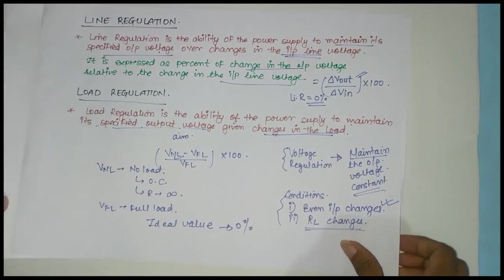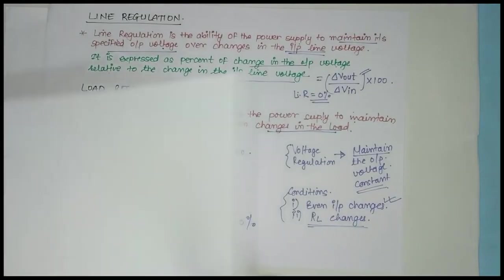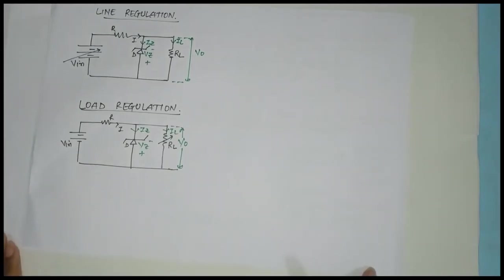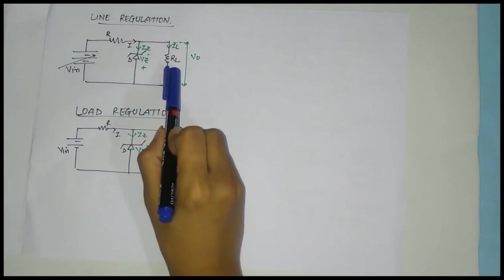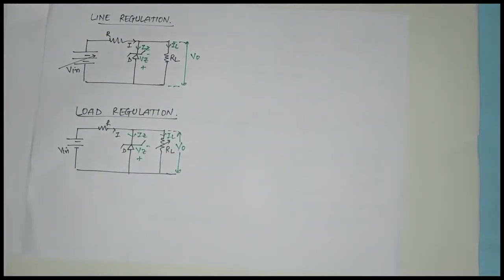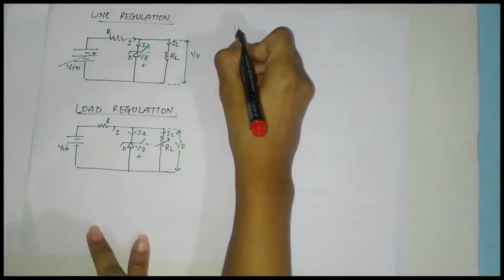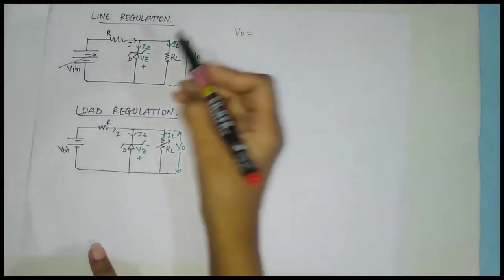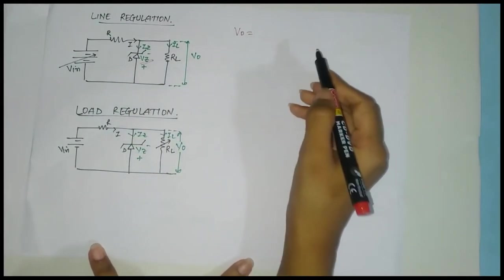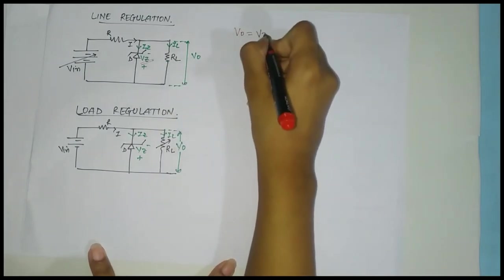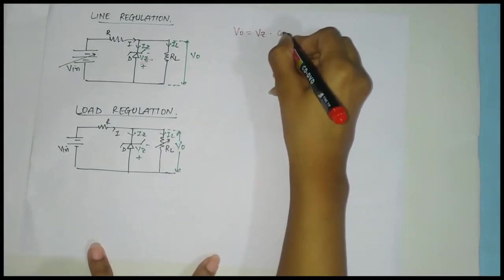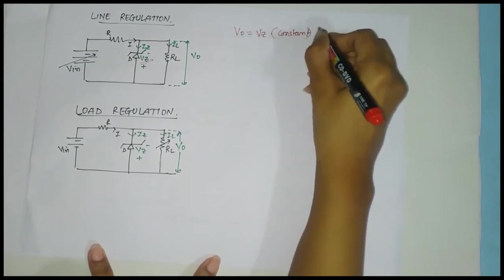Now let's look more deeply into line regulation. This is the circuit diagram for line regulation. In line regulation, the input voltage can change but the output voltage should remain constant, while RL is kept constant. From this diagram, the output voltage V-out equals VZ, because RL is connected in parallel with the Zener diode, and therefore the output voltage equals VZ. This is constant — this is our aim.